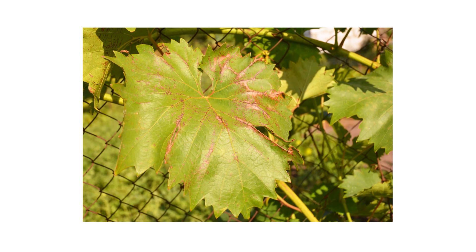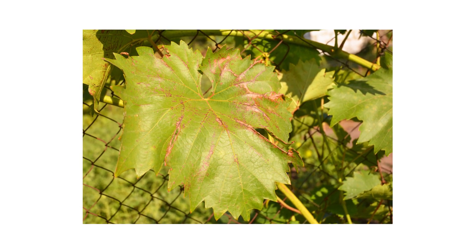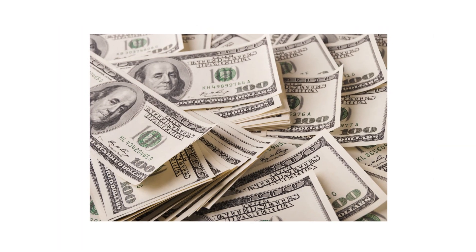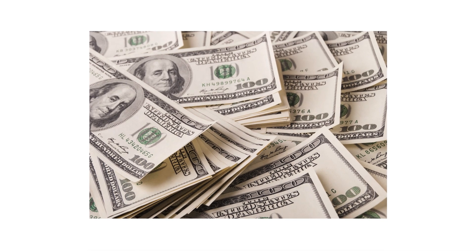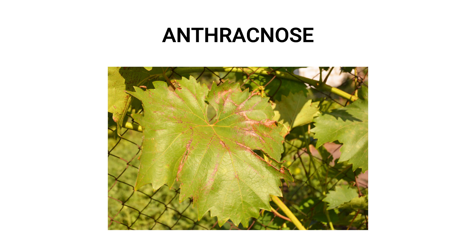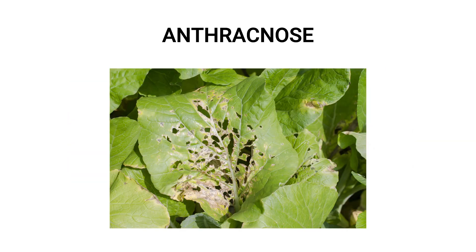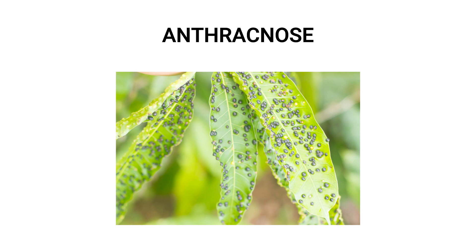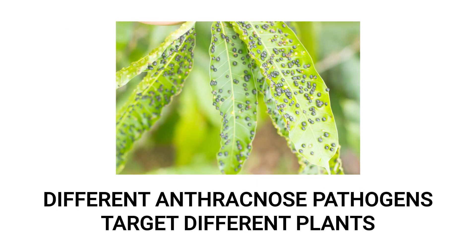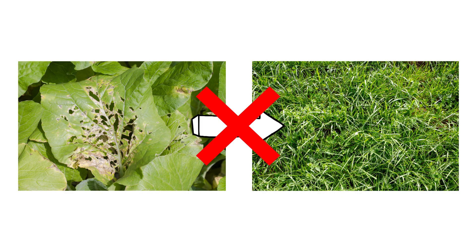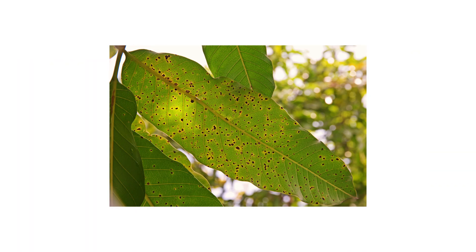The first thing you should do in any pest control plan is identify what exactly you're dealing with. Careless identification can lead to wrong treatment methods, costing you time and money. The term anthracnose actually refers to a group of diseases that affect their host plants in similar ways. Different types of anthracnose are caused by different pathogens — an anthracnose disease affecting a tree won't be able to spread to turf grass, and vice versa.